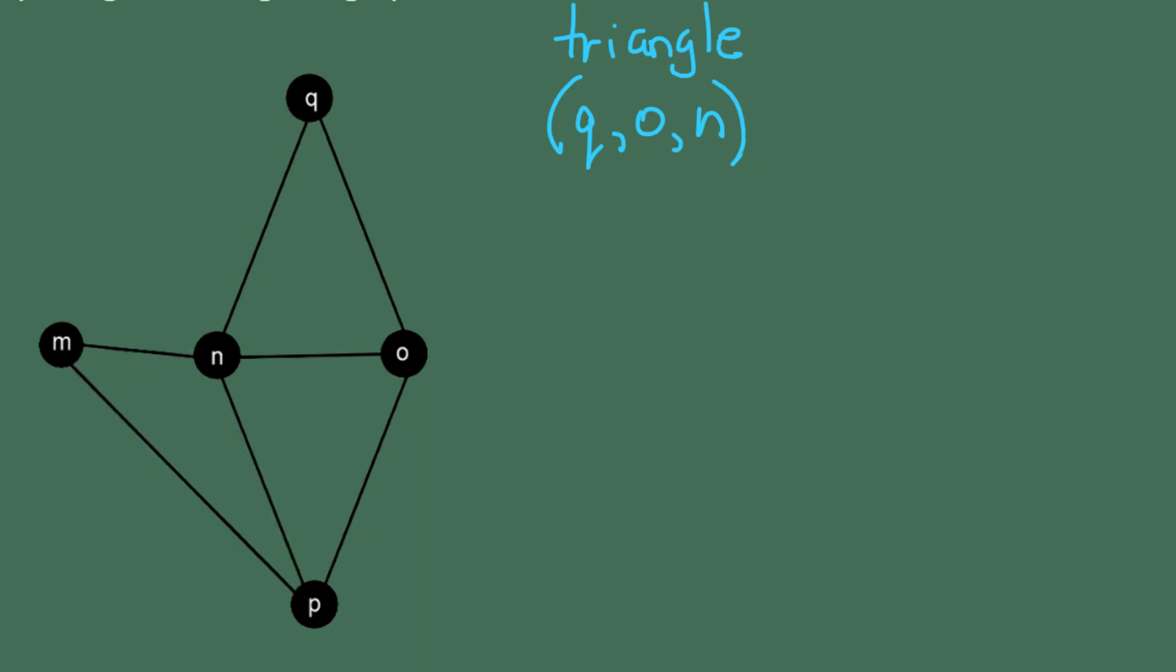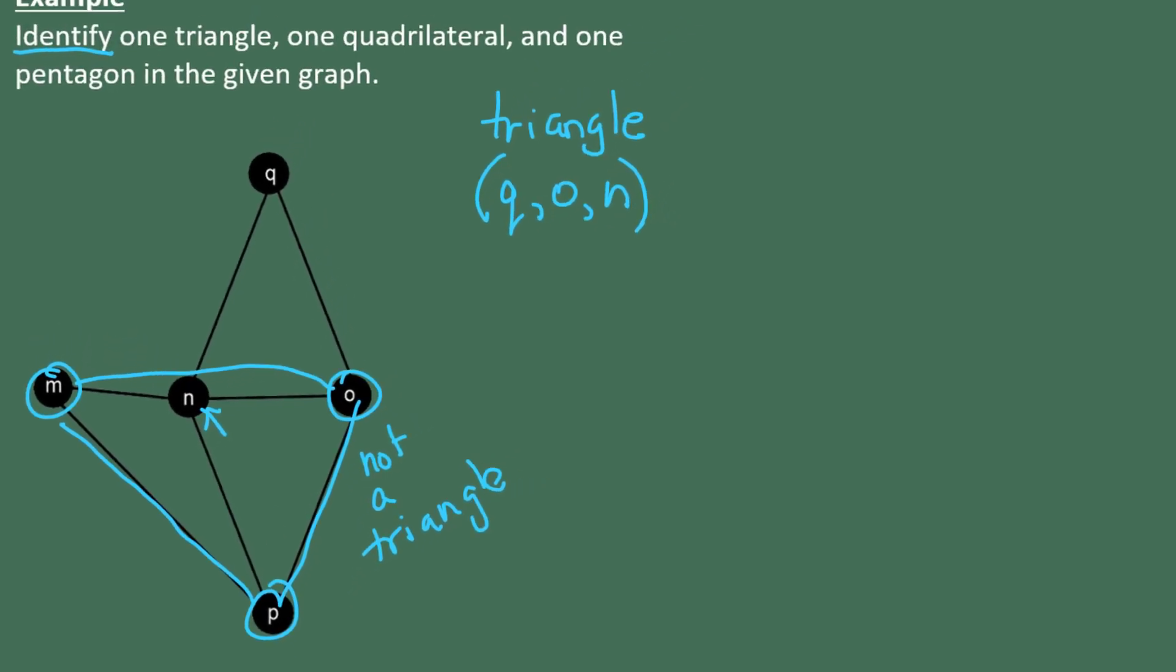But I also could have chosen triangle NOP or I could have chosen triangle MNP. But one thing I could not do is say that M to O to P and back to M is a triangle. This is not a triangle because I would have to skip over vertex N. There is no edge connecting M and O. In other words, M and O are not adjacent. So that series of letters would not make a triangle.